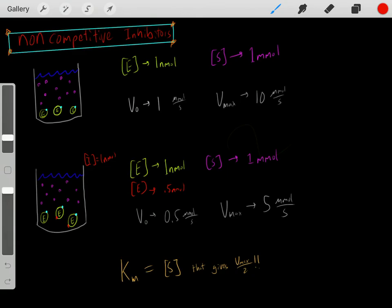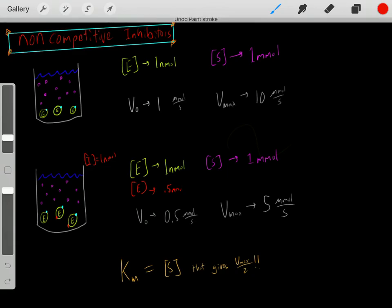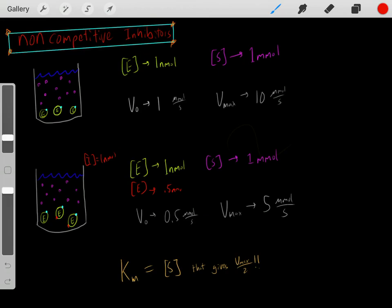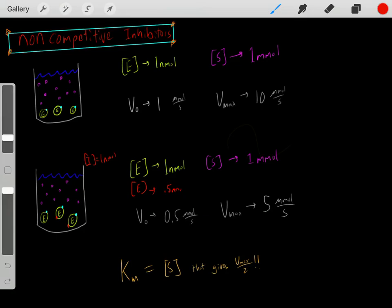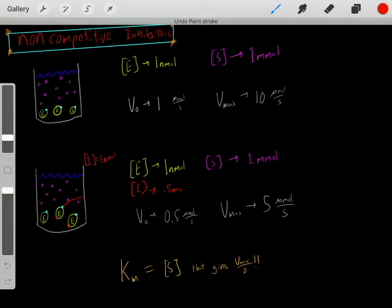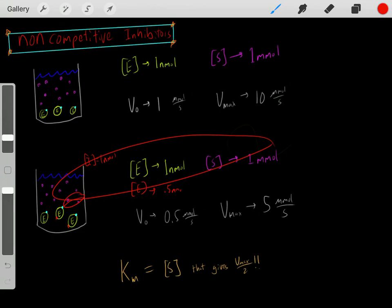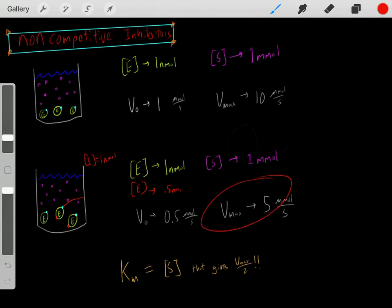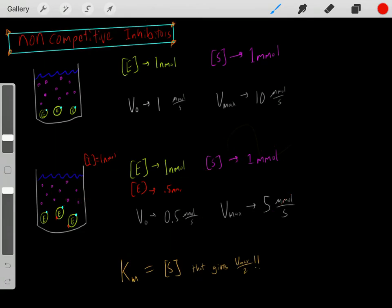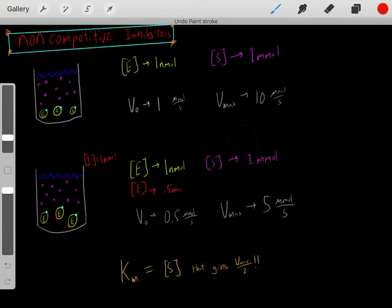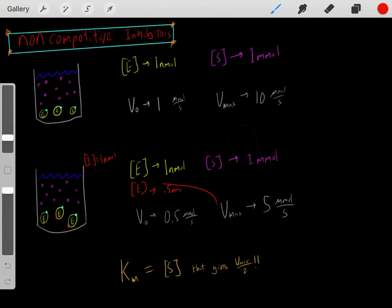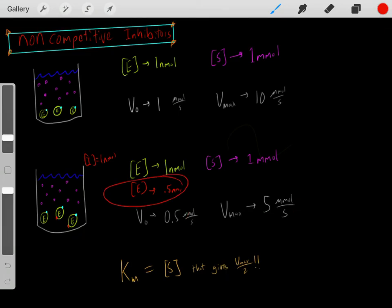This is different from competitive inhibitors, which we learned about in the previous video. Competitive inhibitors bind to the active site, so we could overcome them by increasing the substrate concentration, reaching the normal Vmax. However, non-competitive inhibitors put some enzymes out of commission entirely. With fewer functional enzymes, even increasing the substrate concentration cannot restore the original Vmax.